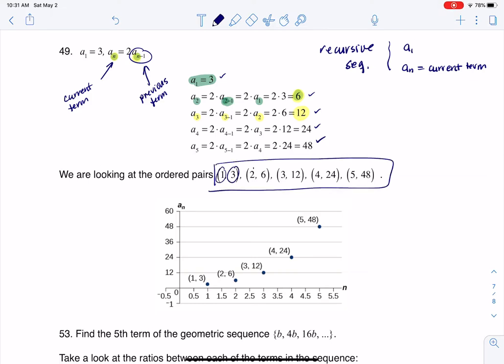The first term was 3, the second term was 6, the third term was 12, so on and so forth, and then I plot those five ordered pairs, and there's the graph of my sequence.